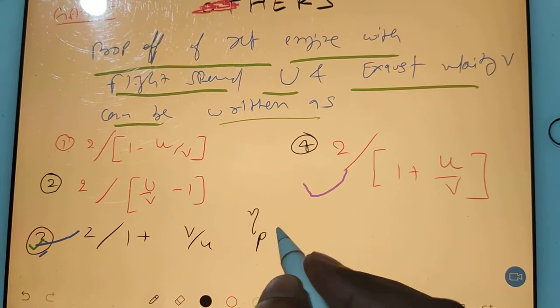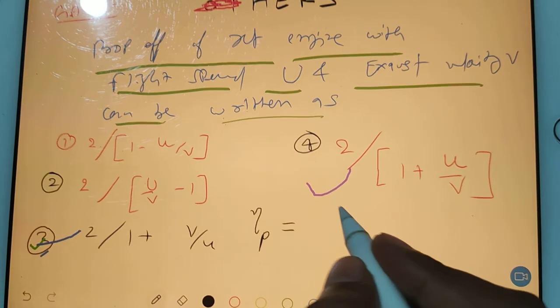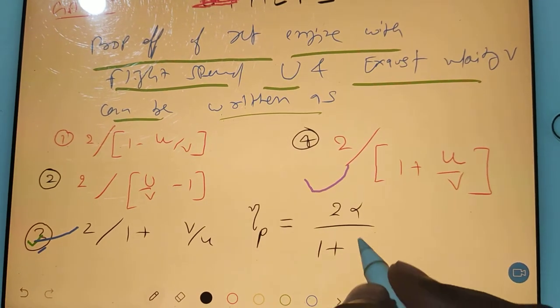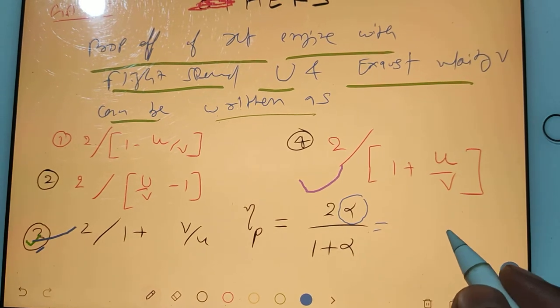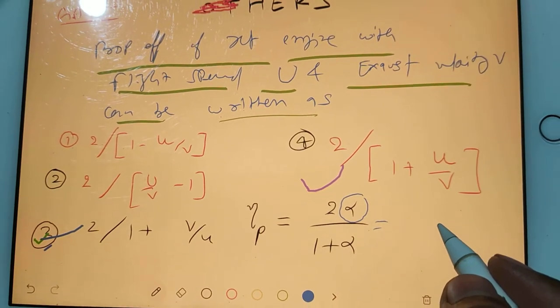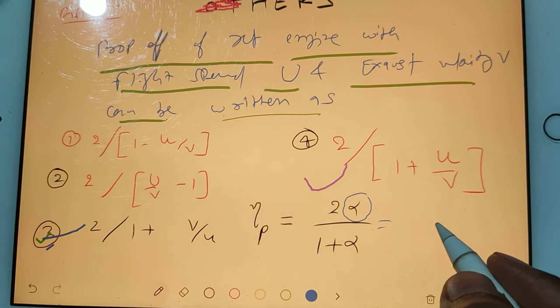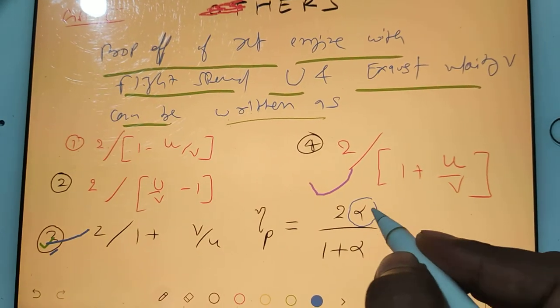Efficiency, that is propulsive, right? How do you find out? 2α/(1+α), correct. What is alpha here? Inlet speed divided by exit speed. It means what? Your alpha is nothing but u/v.